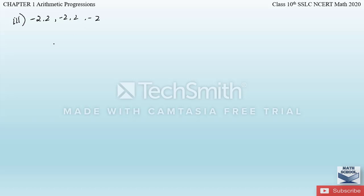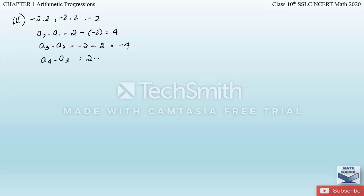For the list minus 2, 2, minus 2, 2: a2 minus a1 = 2 minus (minus 2) = 4; a3 minus a2 = minus 2 minus 2 = minus 4. The common difference is not equal, so this sequence is not an AP and we cannot obtain the next two terms.